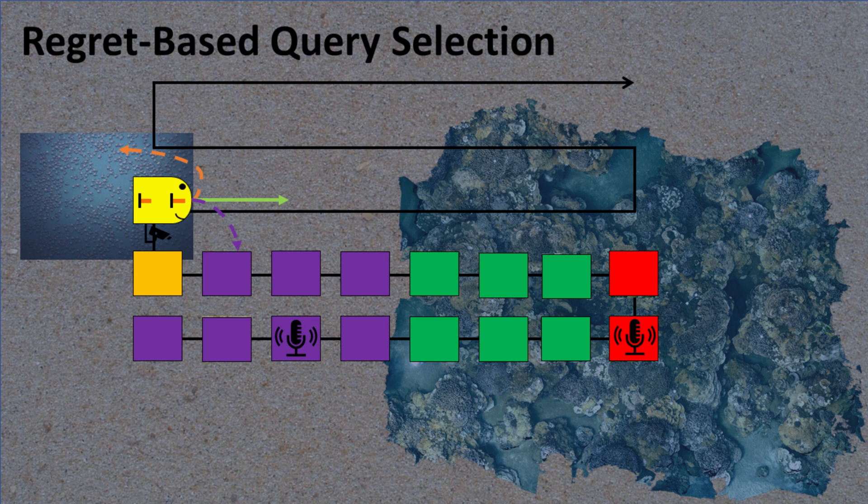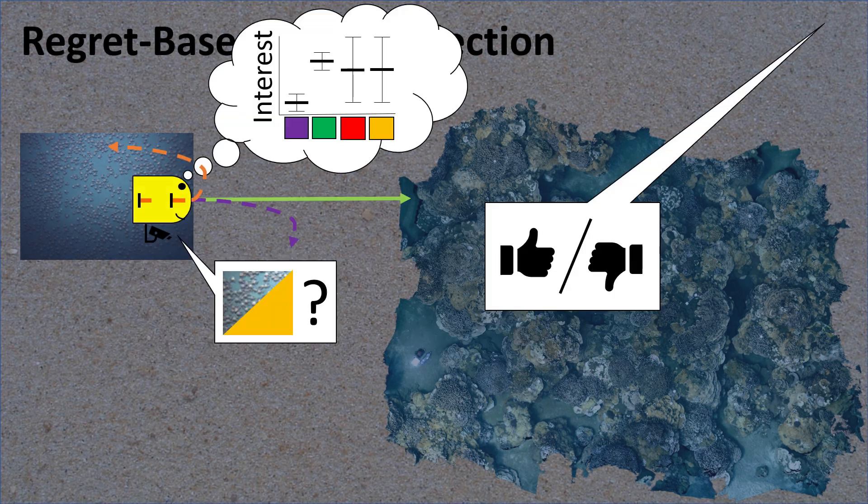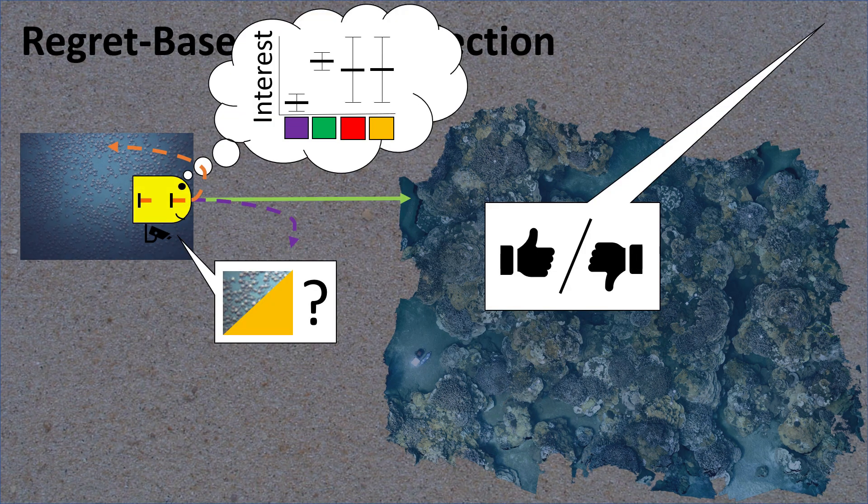Our final contribution is a novel regret-based active learning criterion. Regret represents how much additional reward a robot could gain by having access to some unknown information. At this point, the robot has no idea how interesting corals are or how interesting crabs are. But based on its current location, a regret-based method would prefer to get a label for an image of the crabs.